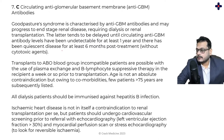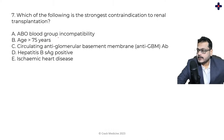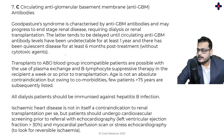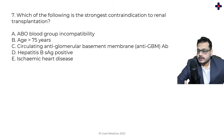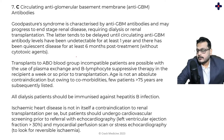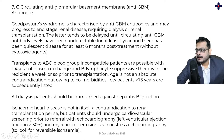Other transplant considerations: ABO blood group incompatibility is not a major barrier because plasma exchange and B-lymphocyte suppressive therapy are available. Age is not the major criterion, though multiple comorbidities matter. All dialysis patients should be immunised against hepatitis B infection — this is standard hospital protocol. Ischaemic heart disease is not a real contraindication to transplant per se.